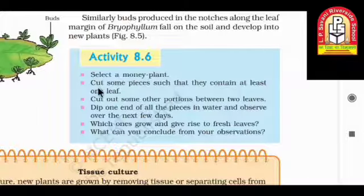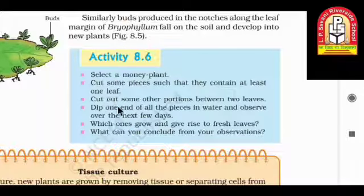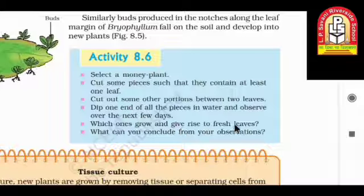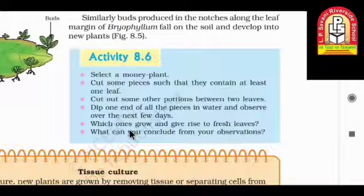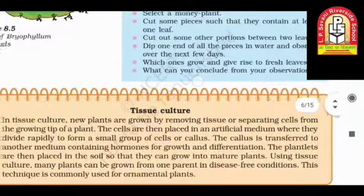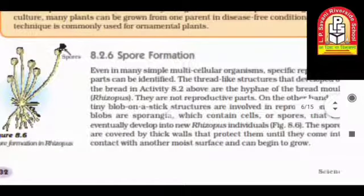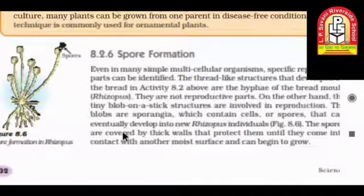Next, select a money plant. Cut some pieces such that they contain at least one leaf, and cut out some other portions between two leaves. Dip one end of all pieces in water and observe over the next few days. Observe which ones grow and give rise to fresh leaves, and note your conclusions.